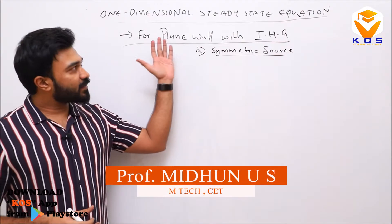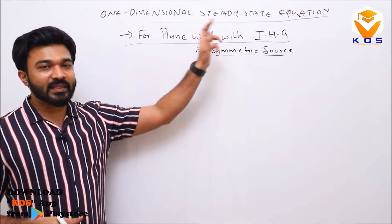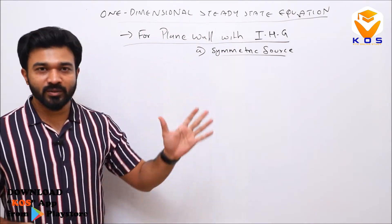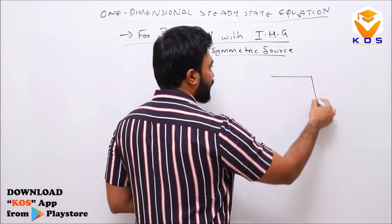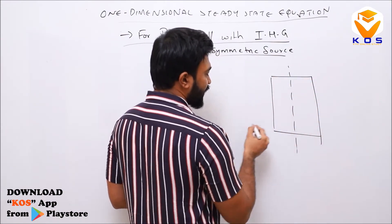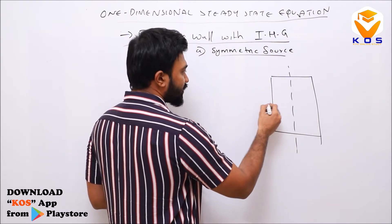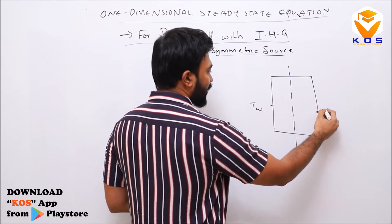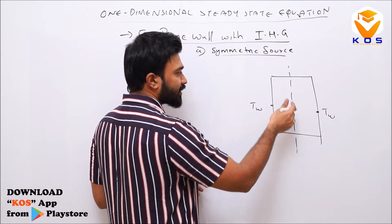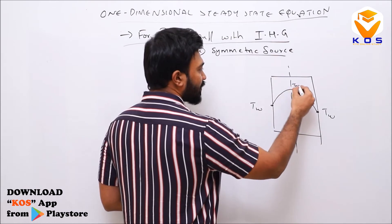Here we have a one-dimensional steady-state equation for a plane wall with internal heat generation. Because of this internal heat generation and it is symmetric, we have a maximum temperature T_maximum.